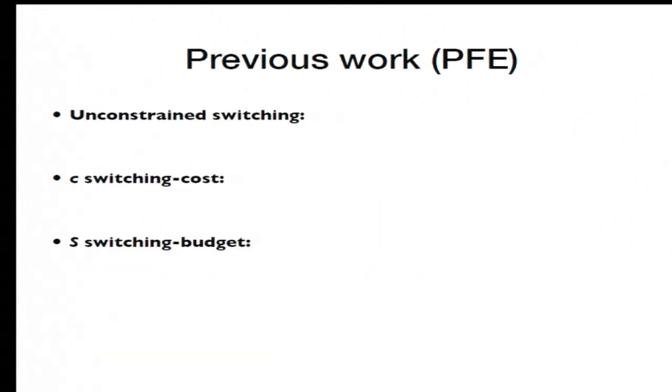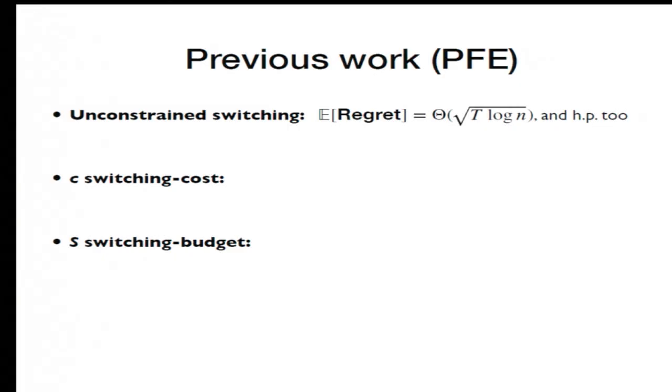For context for our contributions, I'll just sketch the state of the art. And for sake of time, I'll just sketch it for the expert setting. We also have results for the bandits. But, as you'll see, the most interesting phenomena happen for the expert setting. So in the classical setup where you have no penalization for switching, the minimax rate is very well understood. And there are algorithms that achieve the optimal regret, both in expectation and with high probability.